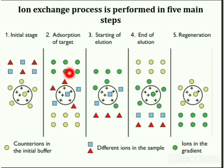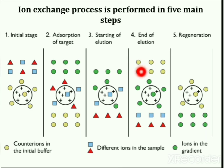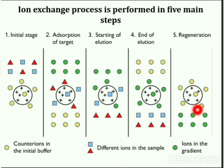In the second step, target ions are adsorbed on the surface of the ion exchanger. The third step is starting of elution and the fourth is end of elution, where particles which have high affinity for the ion exchanger come down the column along with the buffers. In the regeneration step, tightly bonded particles are separated using the corresponding buffer, and these particles are then analyzed spectroscopically.